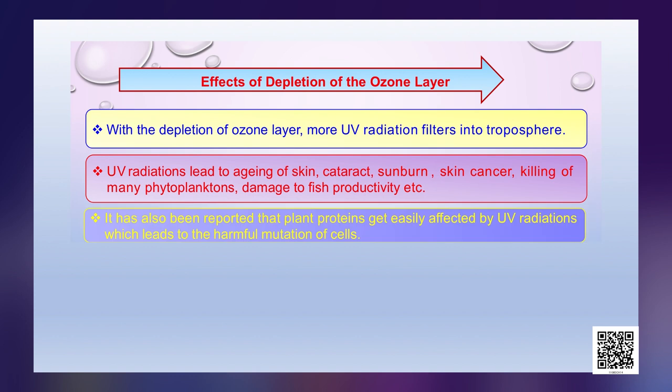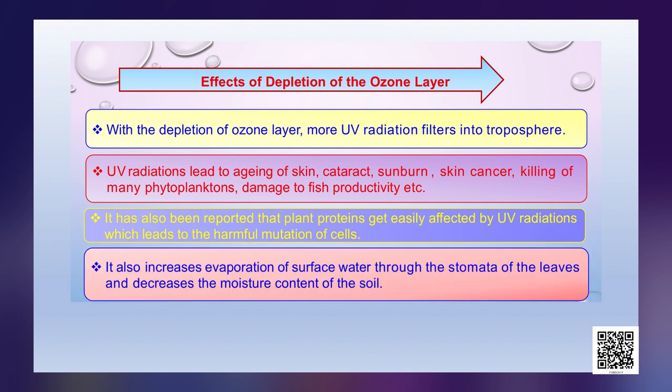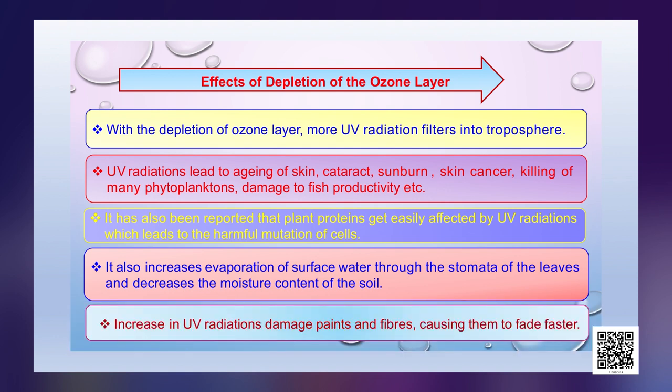It has also been reported that plant proteins are easily affected by UV radiations, which leads to harmful mutation of cells. UV radiation also increases evaporation of surface water through the stomata of leaves and decreases the moisture content of the soil. The increase in UV radiation also damages paints and fibers, causing them to fade faster.